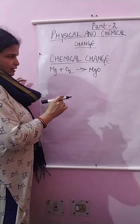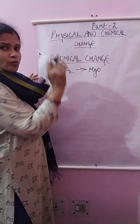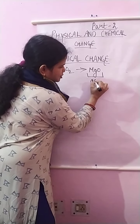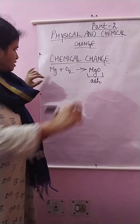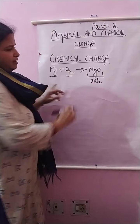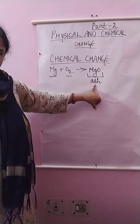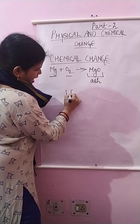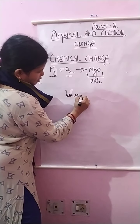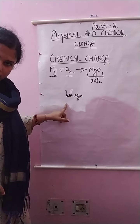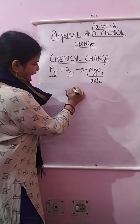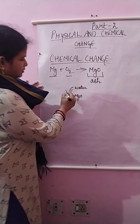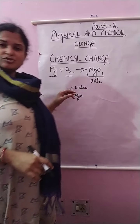So what we will do — this is our magnesium oxide, the ash we collected. We will take this ash, which is magnesium oxide, and we will add water to it, then check it using an indicator.